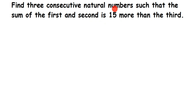Consecutive means a number which comes just after the other — like 4, 5, 6 or 10, 11, 12 or 1, 2, 3. One after the other, they are called consecutive numbers. Here they're asking us to find three consecutive numbers, like three numbers one after the other, and they've also given the relationship between them.